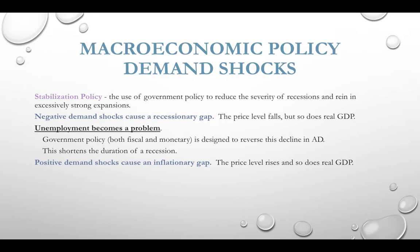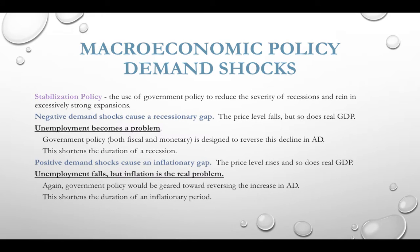Positive demand shocks — increases in aggregate demand — are going to cause inflationary gaps. Price level goes up, and so does GDP. Unemployment is falling, but the problem created is inflation, and that's what the government tries to rein in. A little bit of inflation is okay, but hyperinflation or excessive inflation becomes the problem. Government policy is designed to reverse that increase in aggregate demand, hopefully shortening the duration of any inflationary period.